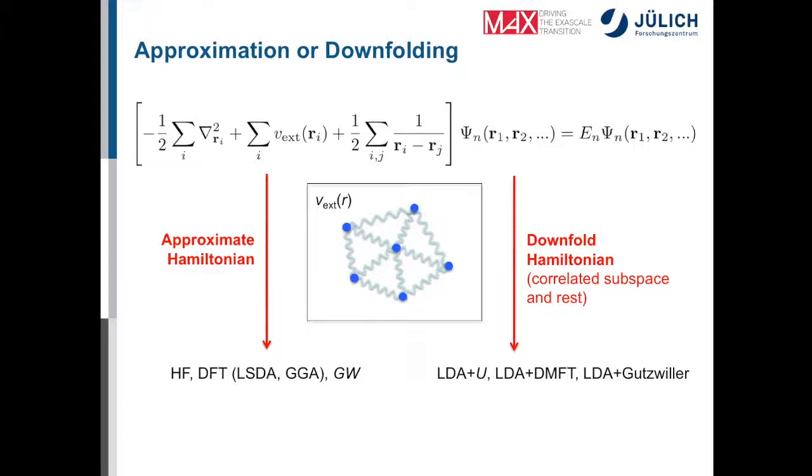The other strategy would be, I would like to keep as much of the physics that is contained in the Hamiltonian as possible, but I just allow for reduction of the system. So I simplify the system. Or in other words, I single out a certain number of electrons. For example, the electrons located in localized d-states, I treat them differently than the rest of the system. I make a partitioning of the system, and that's called downfolding the Hamiltonian. So I identify two parts of the Hilbert space, the correlated subspace that are treated differently from the rest. And then you have approaches like LDA plus U, LDA plus DMFT, LDA plus Gutzwiller, and so on.